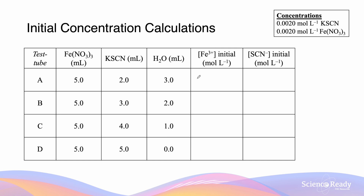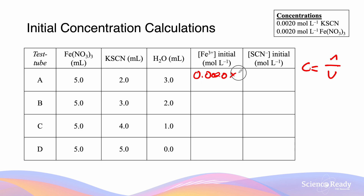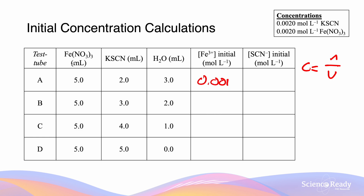The concentration formula is given by c = n/v. Looking at our iron initial concentration, n is going to be equal to the concentration multiplied by the volume, which is 0.0020 × 5 mL divided by our total volume of 10 mL. This gives us a value of 0.001 mol/L. And since we have the same amount of iron nitrate in each solution, all the initial iron concentrations will be 0.001 mol/L.